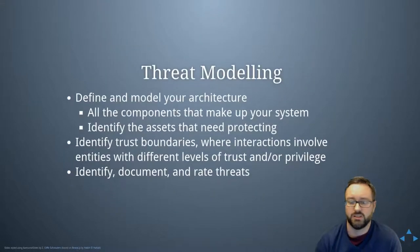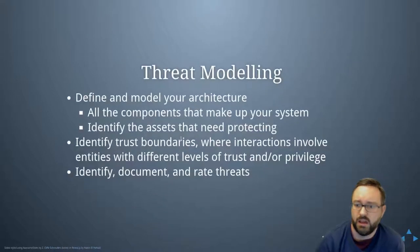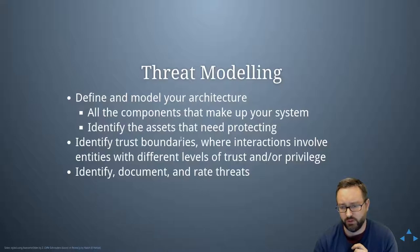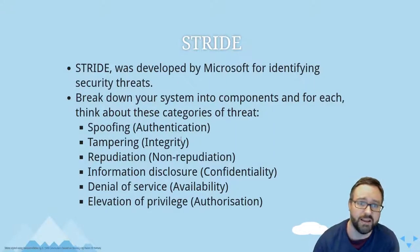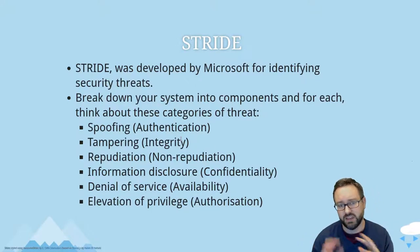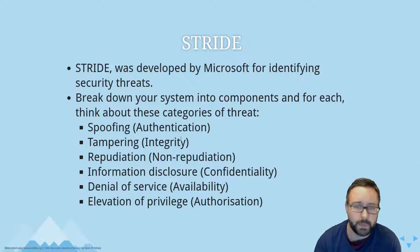One part of Microsoft's approach is to do threat modeling at the design phase. During threat modeling you should define and model your architecture — all the components that make up the system — identify the assets that need protecting, and identify the trust boundaries, which is where interactions involve entities with different levels of trust or privilege. Then you identify, document, and rate threats. STRIDE is Microsoft's method for doing that — for identifying security threats systematically.